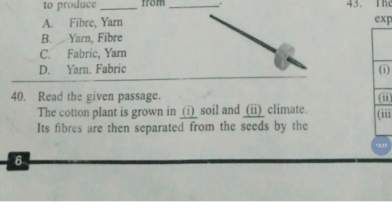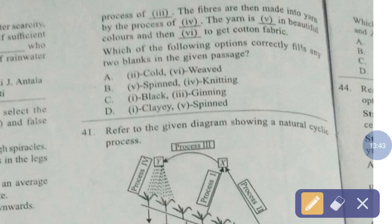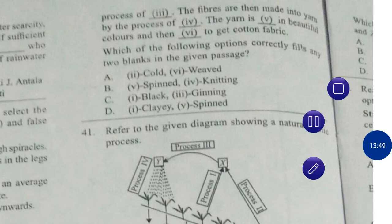Question number 40. Read the given passage. The cotton plant is grown in first soil and second climate. Its fibers are then separated from the seeds by the process of third. The fibers are then made into yarn by the process of fourth. The yarn is fifth in beautiful colors and then sixth to get cotton fabric. Which of the following options correctly fills any two blanks? The correct answer is option number C — first: blank, and third: ginning.